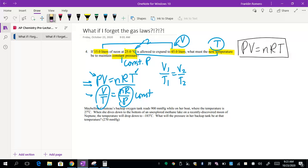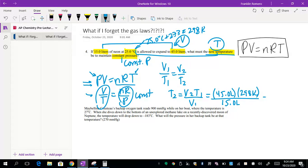So 25 degrees Celsius plus 273, that's 298 Kelvin. I also want to solve for the new temperature for T2, so I'm going to rearrange this equation. So T2 is equal to V2 times T1 divided by V1. If I go ahead and plug in, V2 is 45 liters, T1 is 298 Kelvin, and V1 is 15 liters.